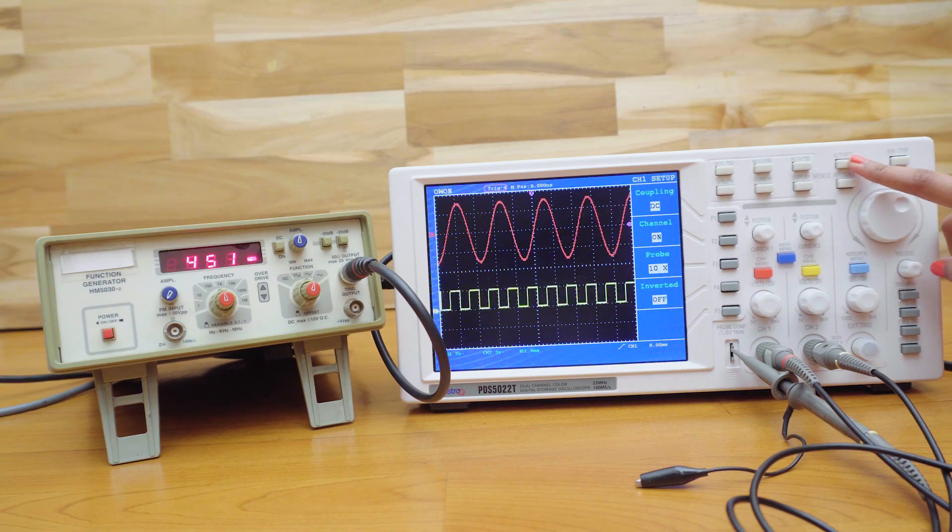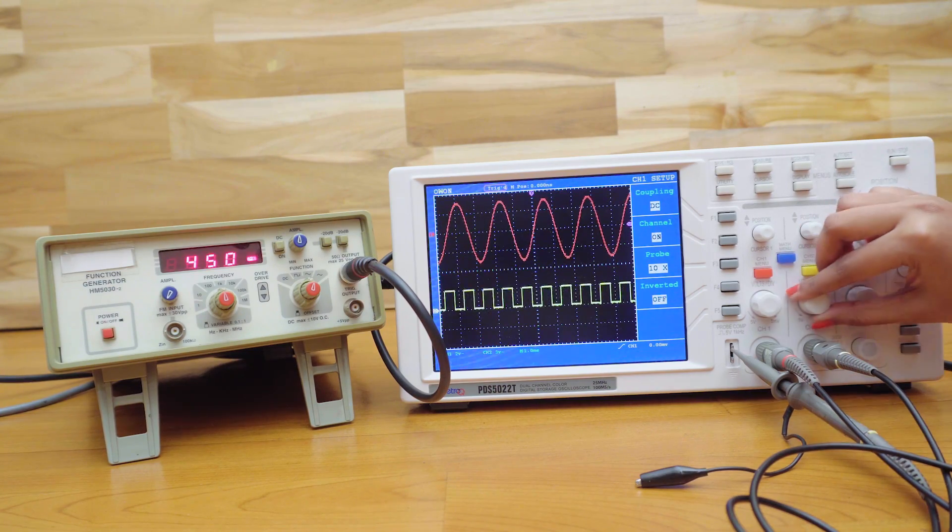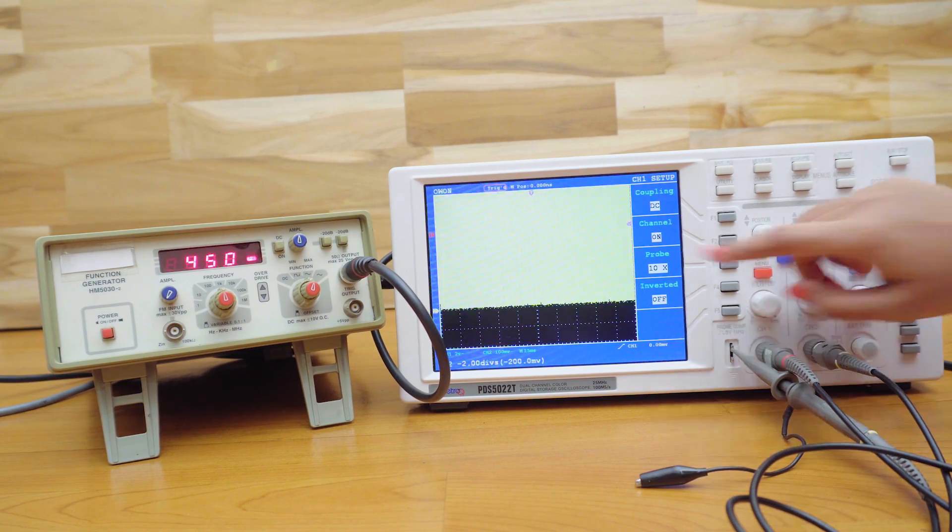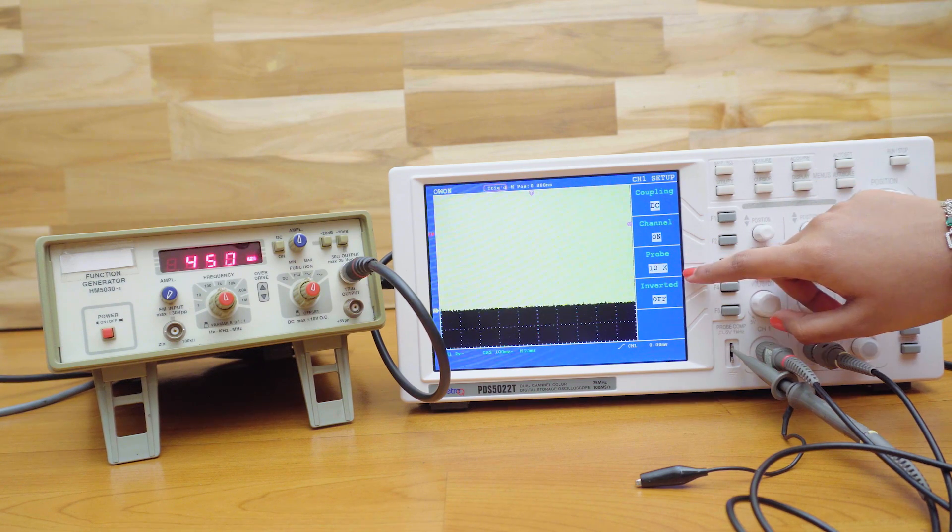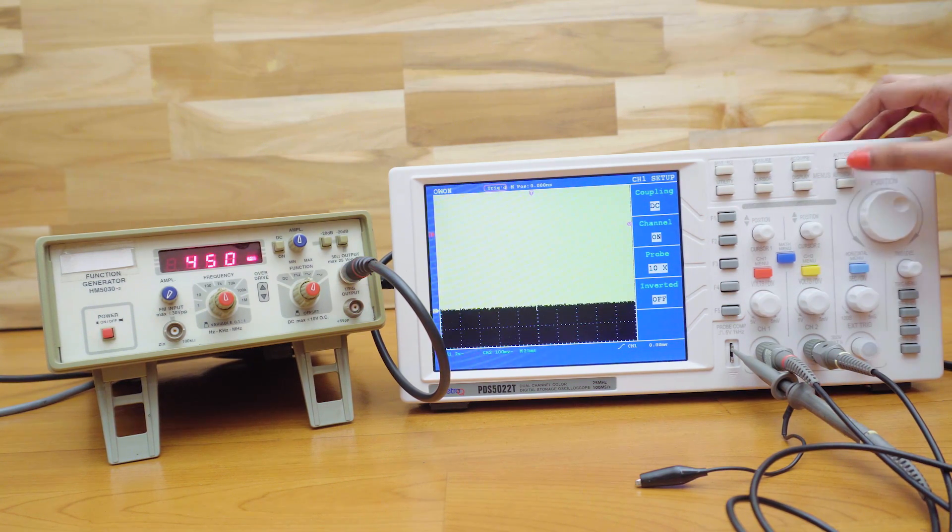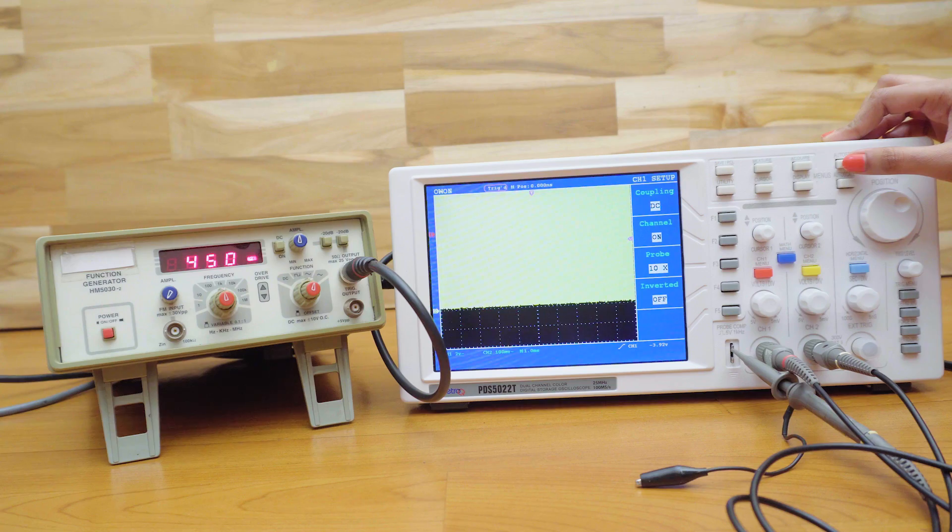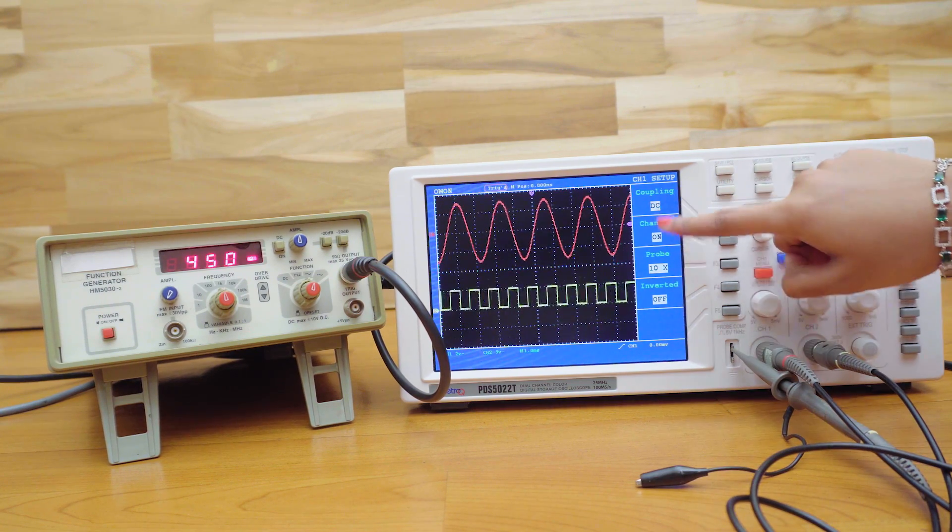There's also an auto set feature in this DSO. If the signal is completely out of range or you're confused, we can use this auto set feature which automatically chooses the best settings for the signal to be displayed. This makes your work very easy.